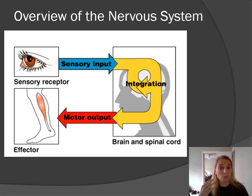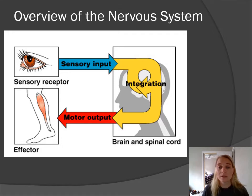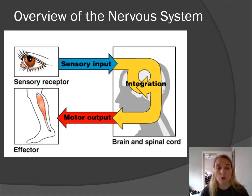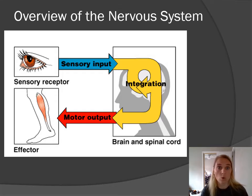Your brain and your spinal cord process that information. It's called integration — it's processing, it's making sense of what's happening — and then it will make decisions on if we need to do anything with that information. This is what we call motor output. They're showing you a leg muscle as the effector, the thing that's going to do the work, but that could be a smooth muscle, cardiac muscle, or a gland like secreting sweat or a hormone. So this motor output could go to various different types of targets.